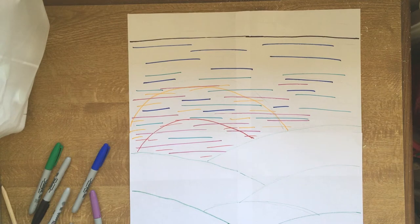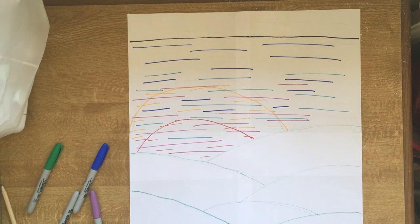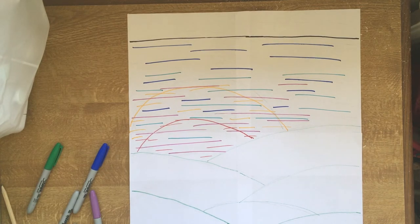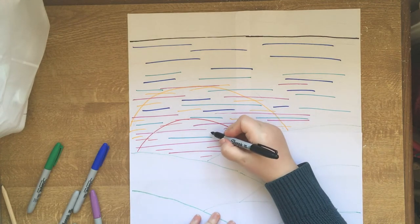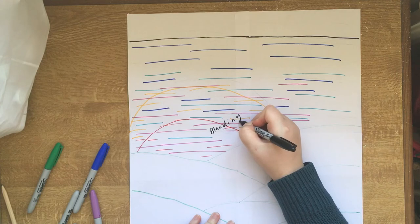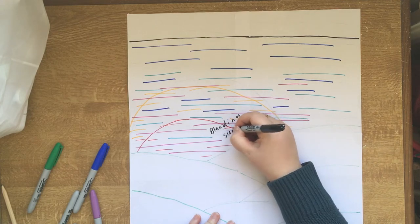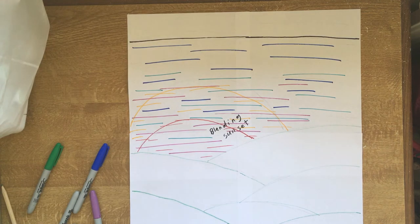So to make it even clearer as I'm working from it, I'm going to make myself some little notes as I go through as well. So let's go note blending sunset. So that's clear for me there.